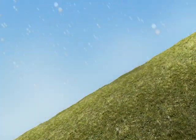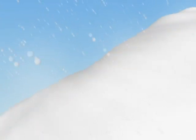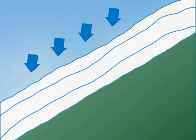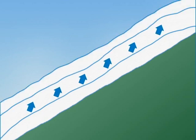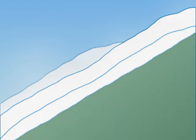Throughout the winter, snow builds up in successive layers forming what is known as the snowpack. The snowpack on a slope is subject to two major forces: the force of gravity, which draws the snow downward — the weight of the snow — and the forces of friction, which keep the snow in place — the cohesion of the snow. Snow gives way and an avalanche is triggered when these forces are out of balance in the snowpack.